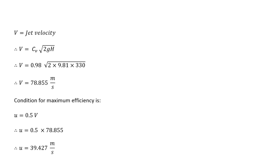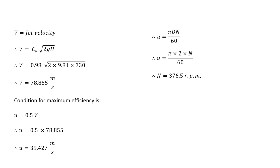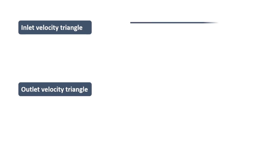The condition for maximum efficiency is u equal to 0.5 times the jet velocity, so 0.5 into 78.855 gives u as 39.427 meters per second. Since u is also equal to pi*D*N divided by 60, solving for N gives us 376.5 RPM. This is the speed of the turbine for the maximum efficiency condition.